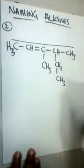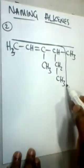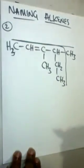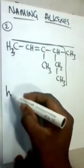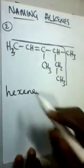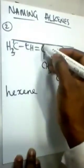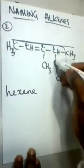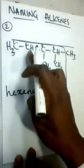Identify the longest chain. Let's draw a straight line — a straight line would take one, two, three, four, five carbon atoms. But if we bend this line towards the end, we get a longer chain of six carbon atoms. So that is hexene. Now look at the double bond — it is placed on the second carbon.